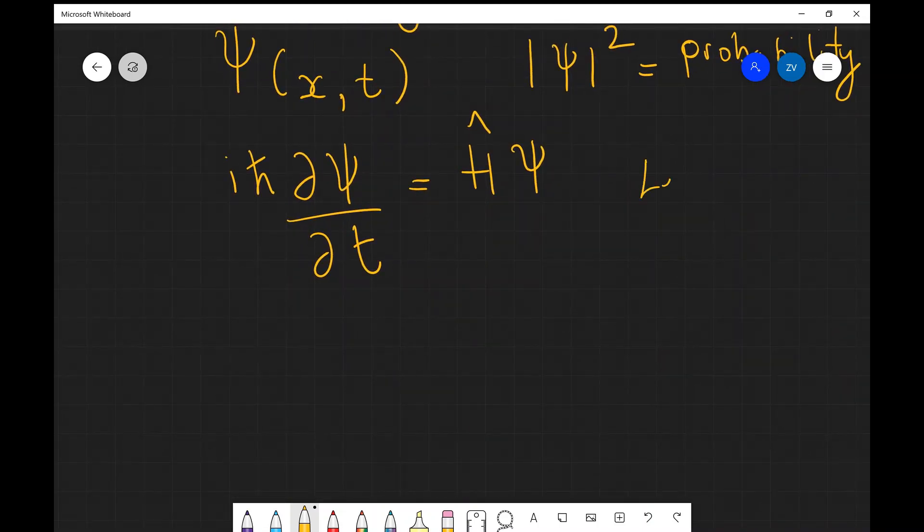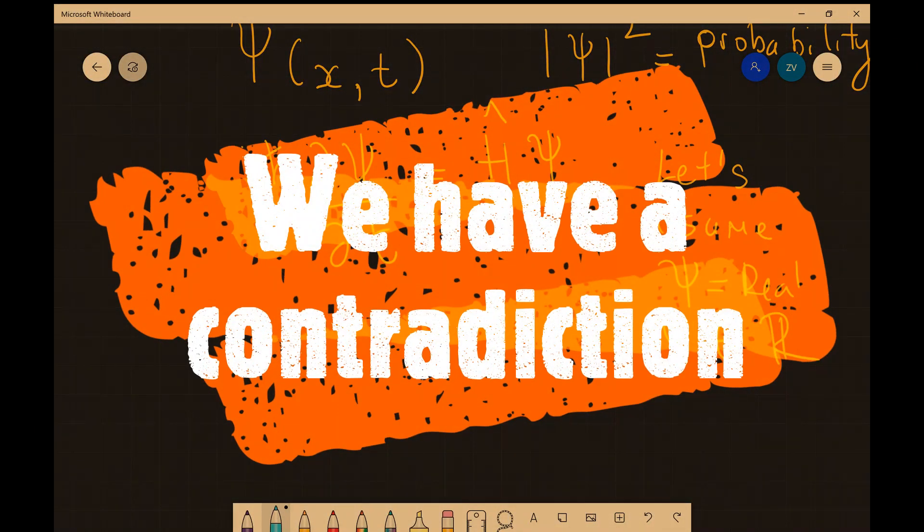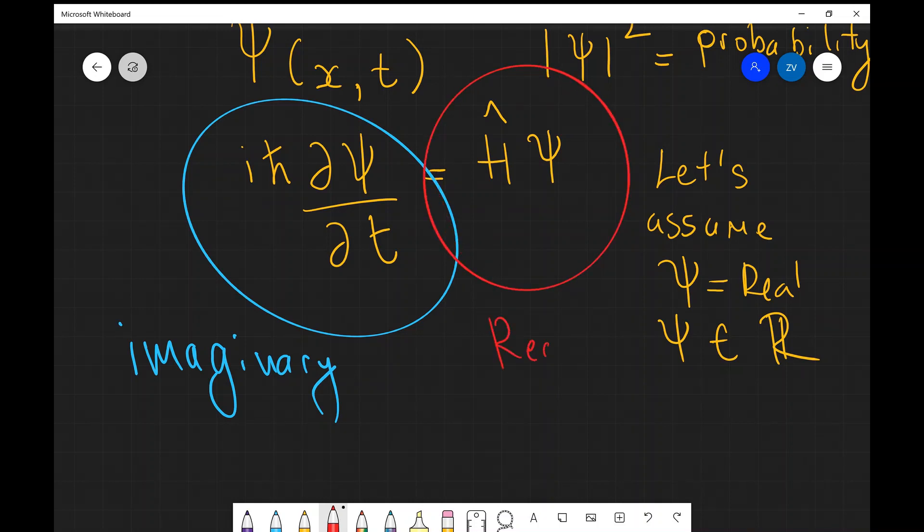So let's for a moment assume that the wave function psi is real. So psi is a member of the real number set. There's no imaginary component. There's no i anywhere in that function. Well if that's the case then we'll have a mathematical contradiction because the left hand side of this equation will clearly be imaginary. So this here will be imaginary and the one here on the right, the Hamiltonian which is applied to the wave function, this is going to be real. Well we cannot really have that. We cannot have an equation in which the left hand side is imaginary but then the right hand side is real. So we have reached a contradiction in this case.